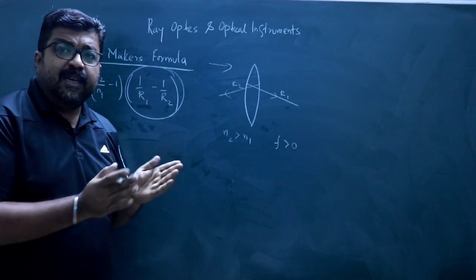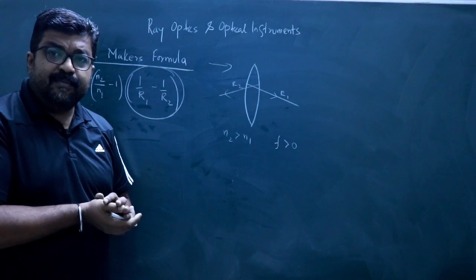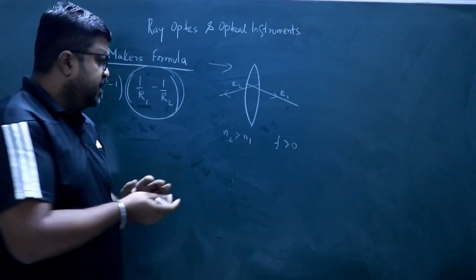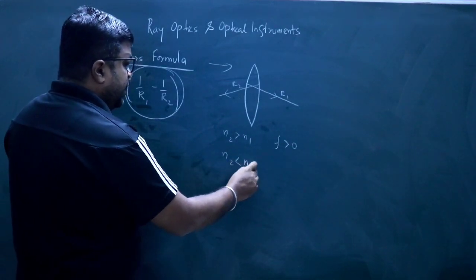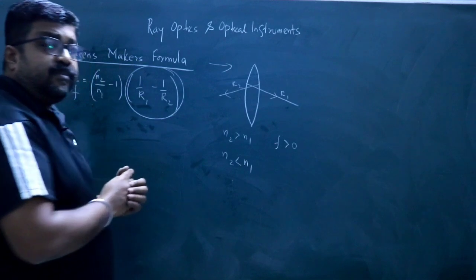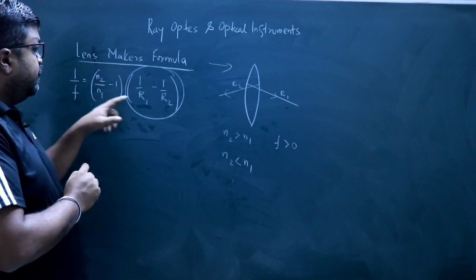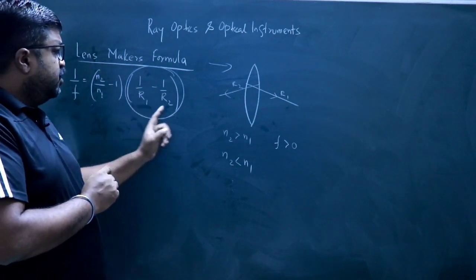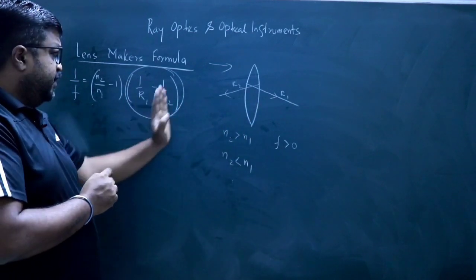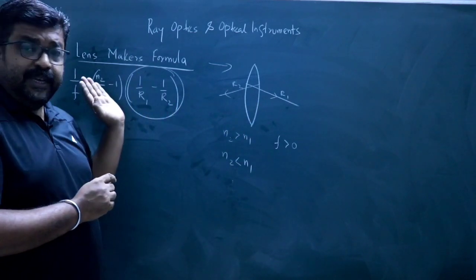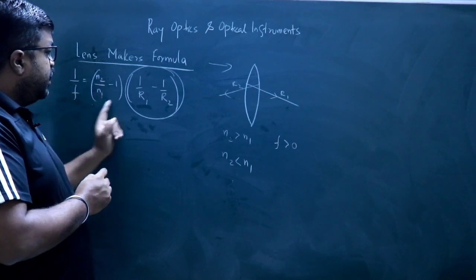The focal length is positive — that means the bi-convex lens behaves like a converging lens. But if N2 is less than N1, the quantity (1/R1 − 1/R2) remains positive for a bi-convex lens, but the quantity (N2/N1 − 1) becomes negative.